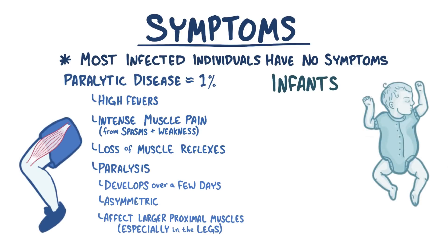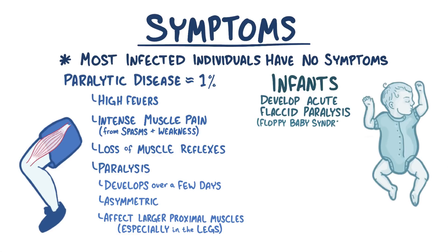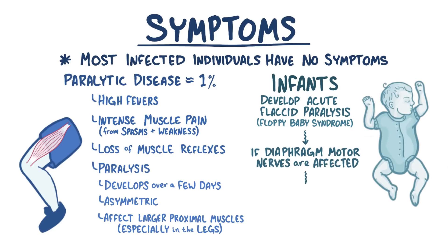Infants with poliomyelitis often develop acute flaccid paralysis where they go limp, kind of like a rag doll, which is why it's sometimes called floppy baby syndrome. Ultimately, if the motor nerves of the diaphragm are affected, it can cause difficulty breathing and even death.